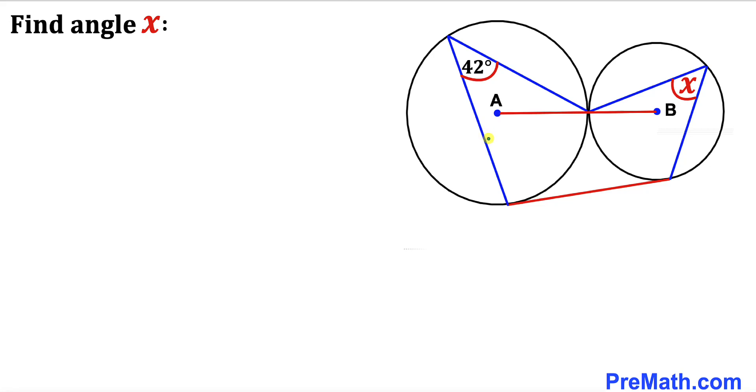Welcome to PreMath. In this video we have two circles of different dimensions that touch each other at one point. This line is tangent to both circles, and this angle at the circumference for the big circle is 42 degrees. We are going to calculate angle x.